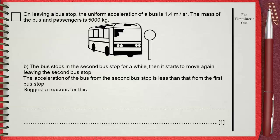then it starts to move again leaving the second bus stop. The acceleration of the bus from the second bus stop is less than that from the first bus stop. Suggest a reason for this.